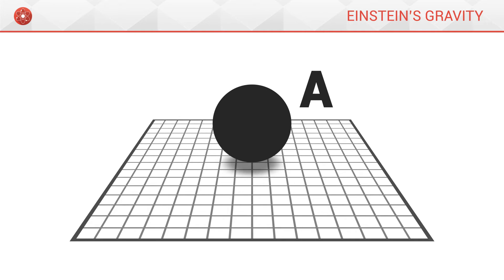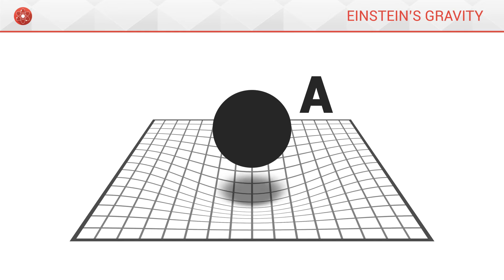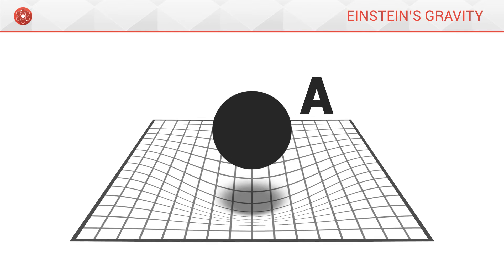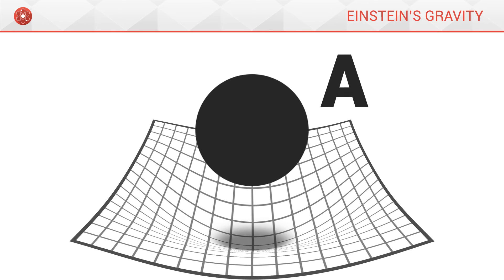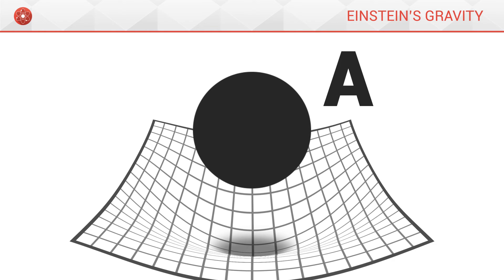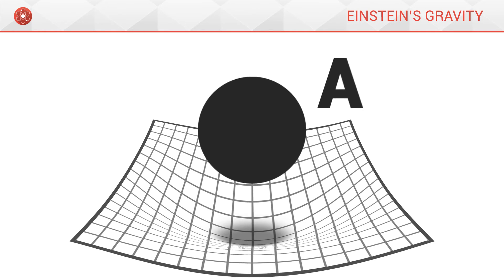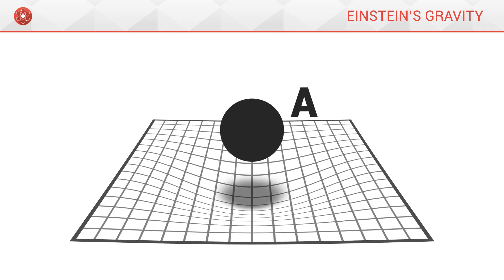When A is placed on this grid, it distorts it according to its mass. The more massive the object, the more it will distort space-time. Inversely, the less massive, the less space-time will be disturbed.